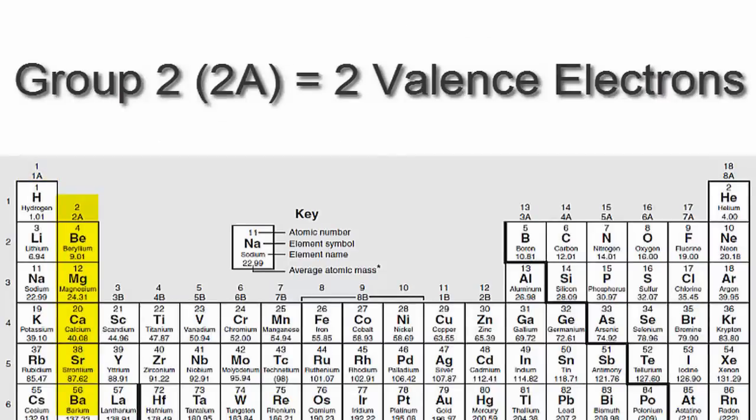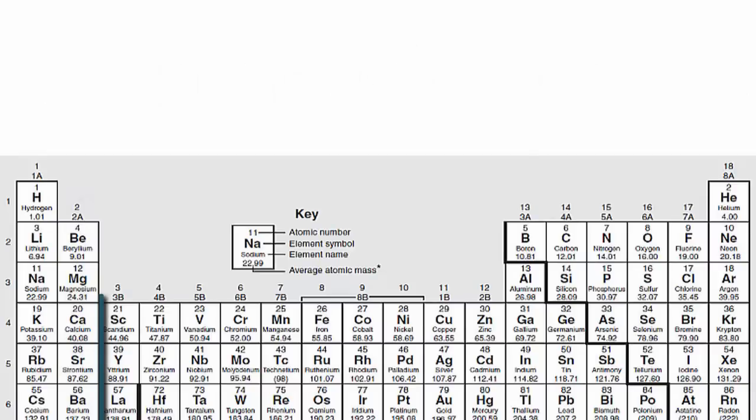If you look at group 2 or 2A, you'll see that those elements have two valence electrons. We'll skip over the transition metals since they're a bit more complicated and probably don't apply to you.